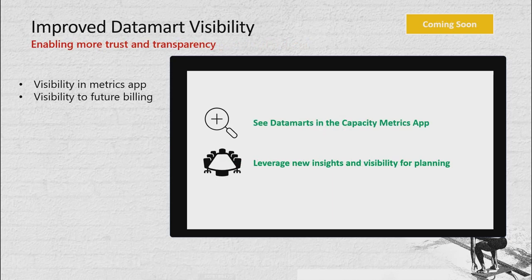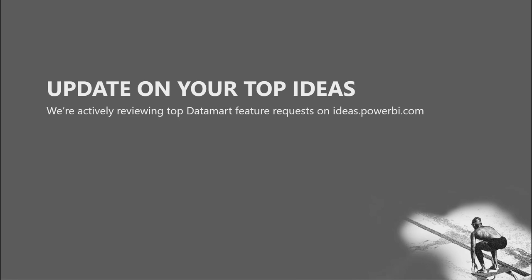We've heard feedback that in order to provide the right level of trust in this product, you need additional transparency from a capacity metrics perspective. Data marts are included as part of your Premium subscription, but you still want to see what usage charges look like since we bill based on CPU consumption. We're planning to expose this in the capacity metrics app so you can plan cross-charging of other departments and manage, monitor, and govern capacity usage.